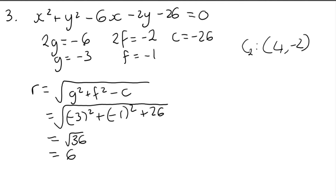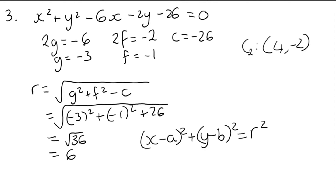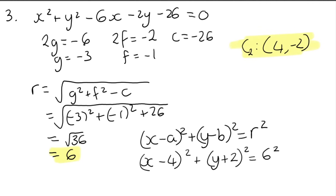The equation of a circle is in the form x minus a all squared plus y minus b all squared equals radius squared. Our centre is (4, negative 2) and our radius is 6. Plugging into the formula: x minus 4 all squared plus y plus 2 all squared equals 6 squared. You do not have to expand the square brackets, but you do have to square the radius. So the final answer is x minus 4 all squared plus y plus 2 all squared equals 36.